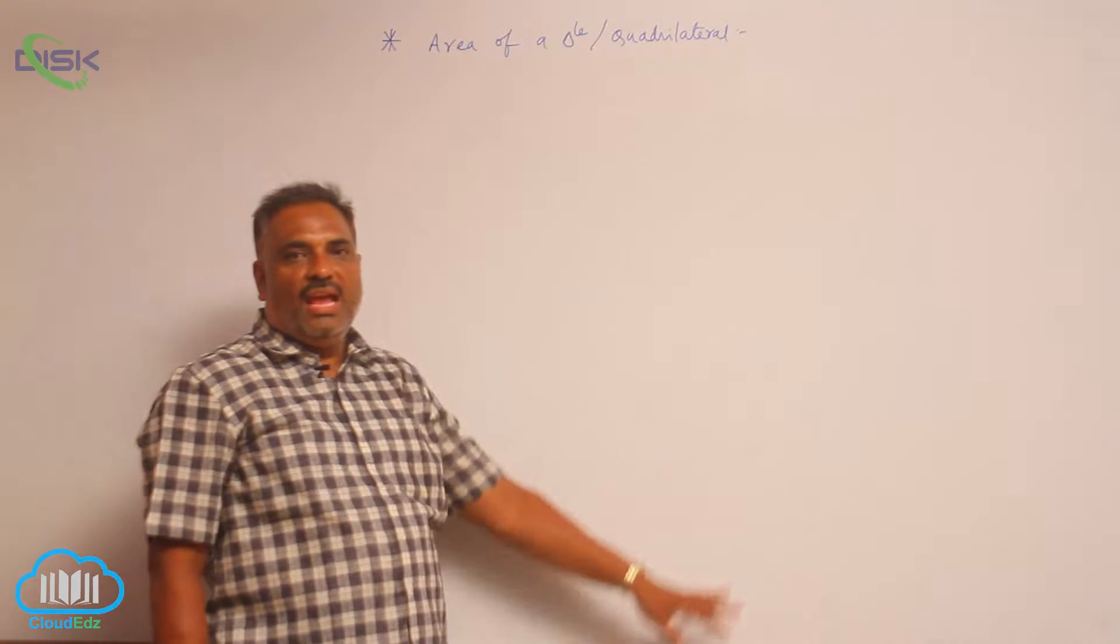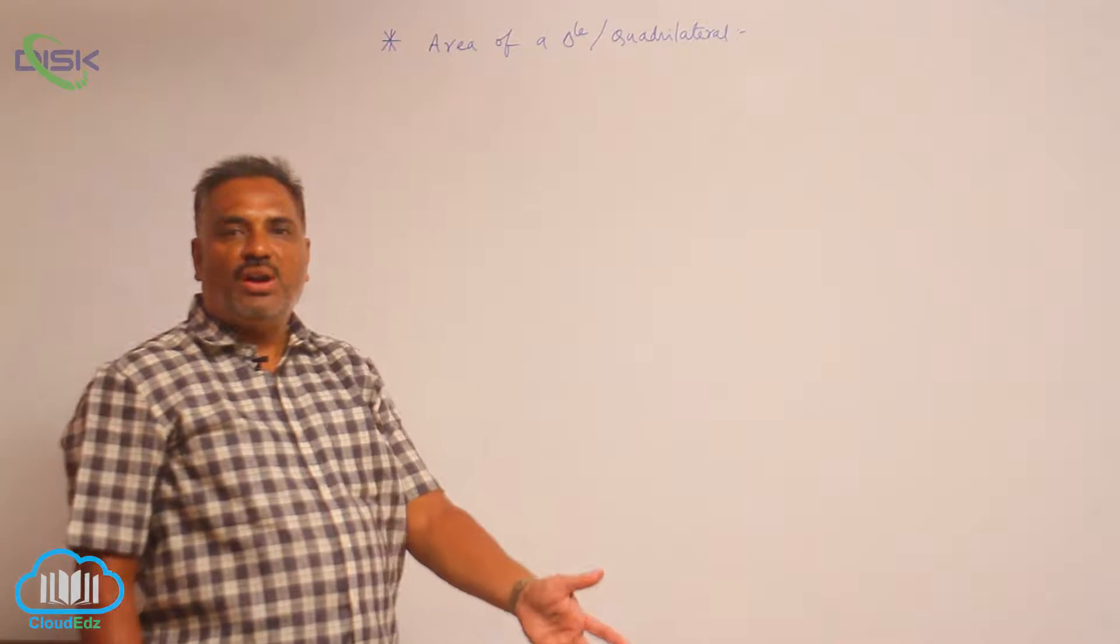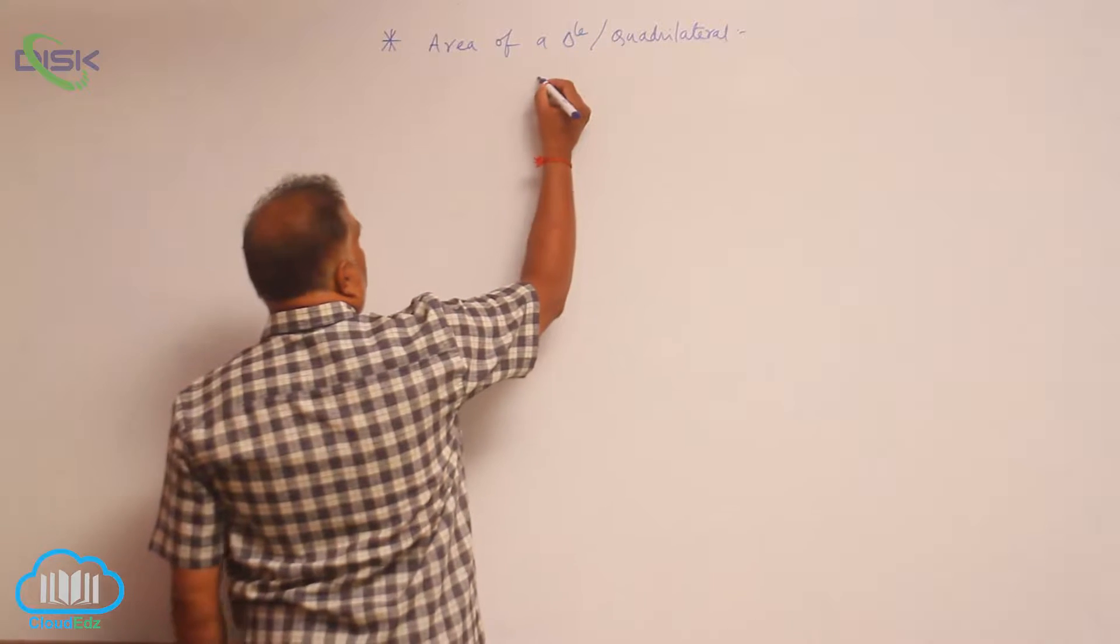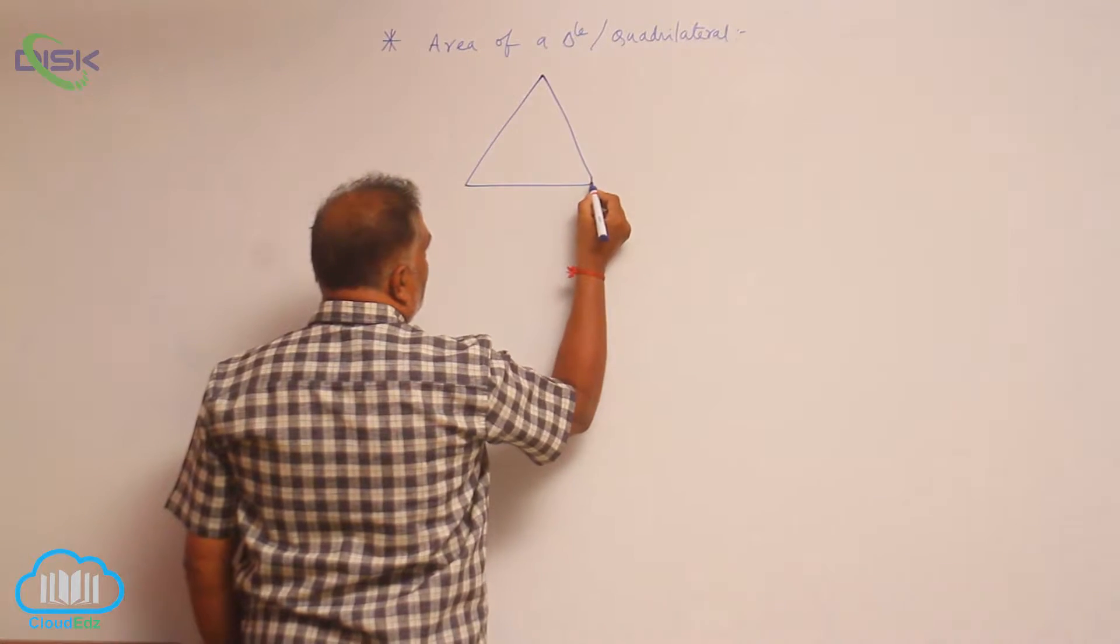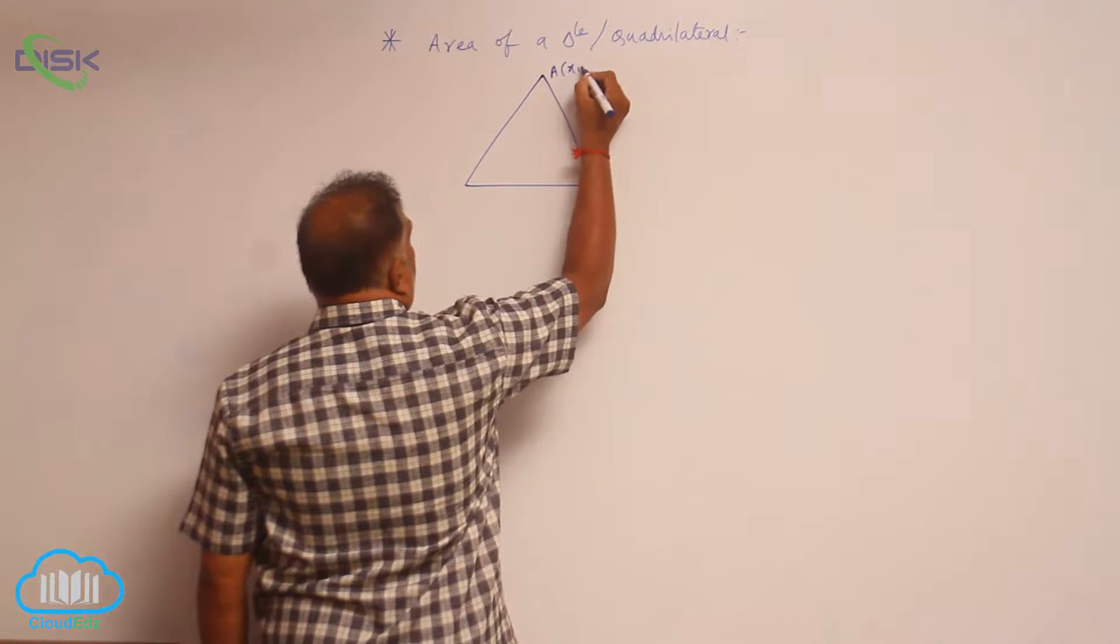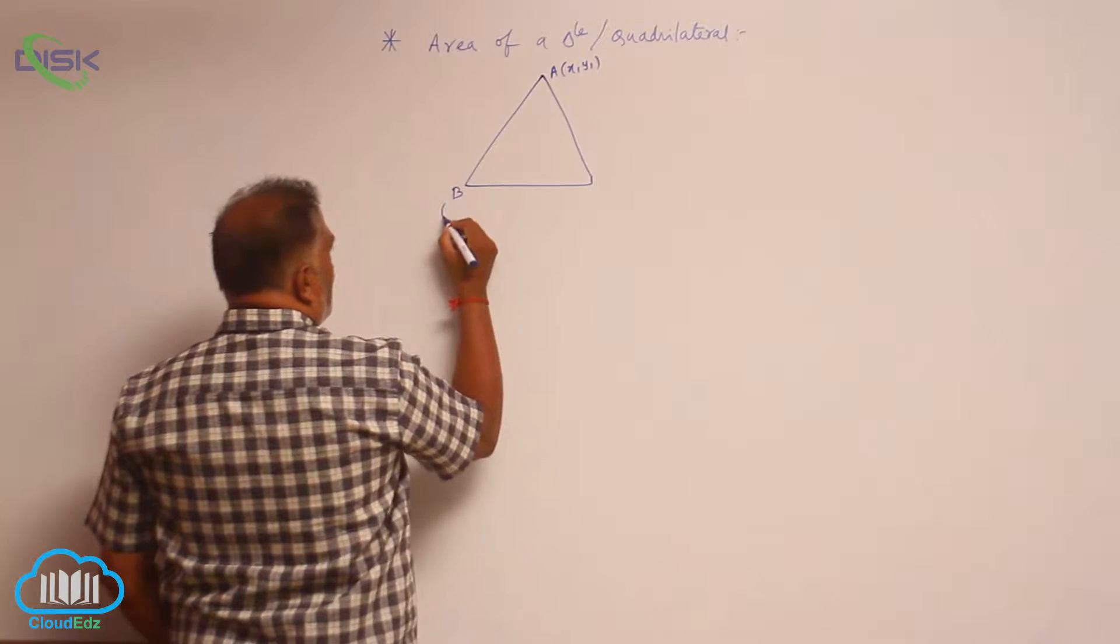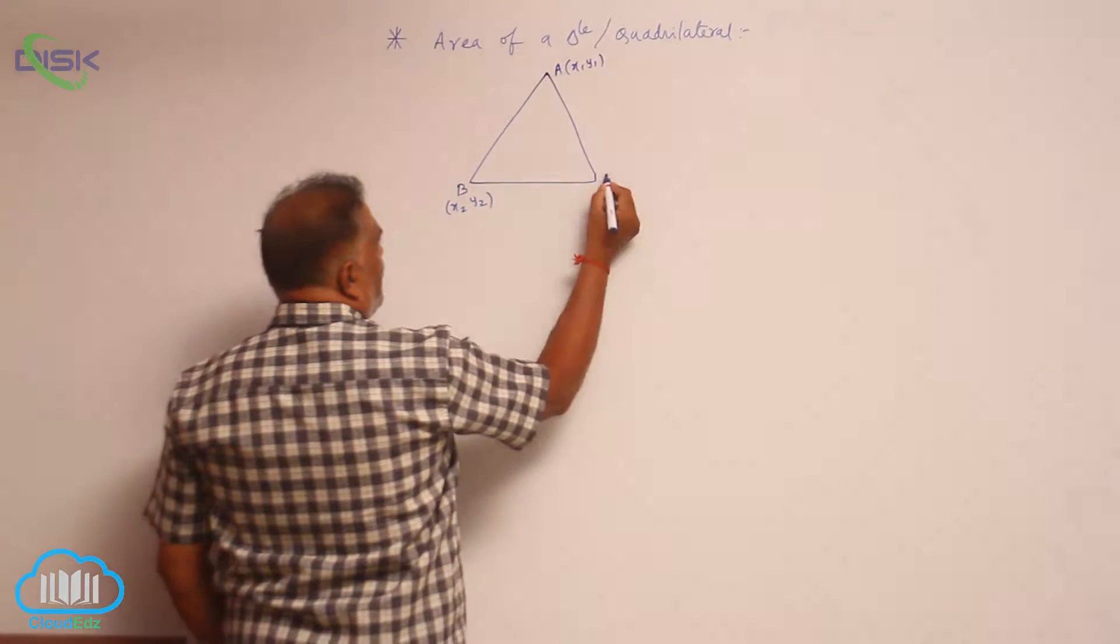We will discuss about a new concept: area of a triangle and quadrilateral. You know that in a triangle there are three vertices. Now this is going to be A(x1, y1), B(x2, y2), C(x3, y3).